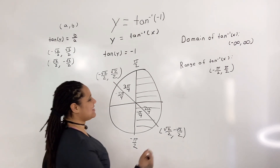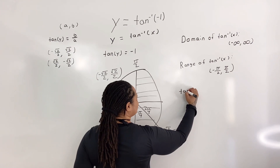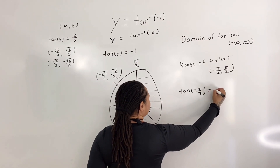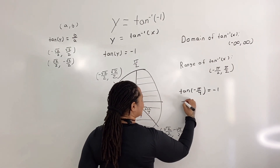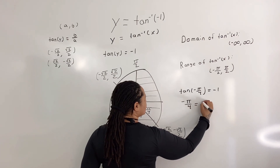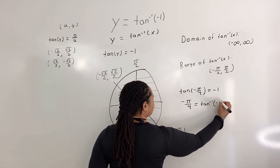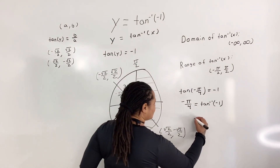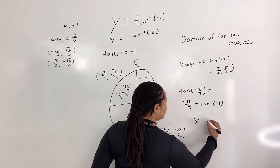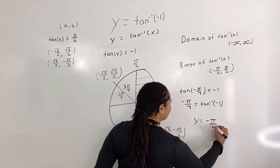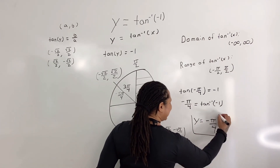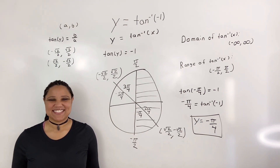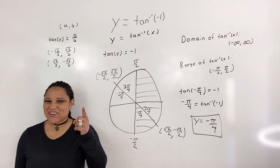So we say that tangent of negative π over 4 is equal to negative 1, which means that negative π over 4 is equal to tangent inverse of negative 1. Therefore, y is equal to negative π over 4. And that is how you find the exact value of inverse tangent. Thank you for watching, and you're awesome!